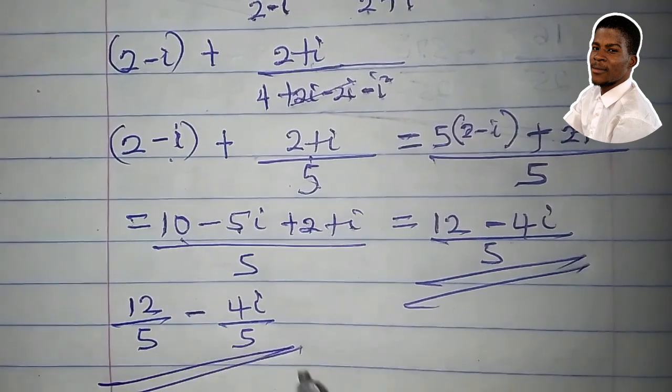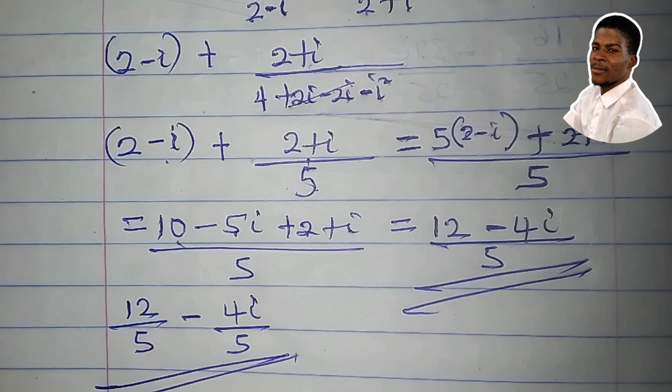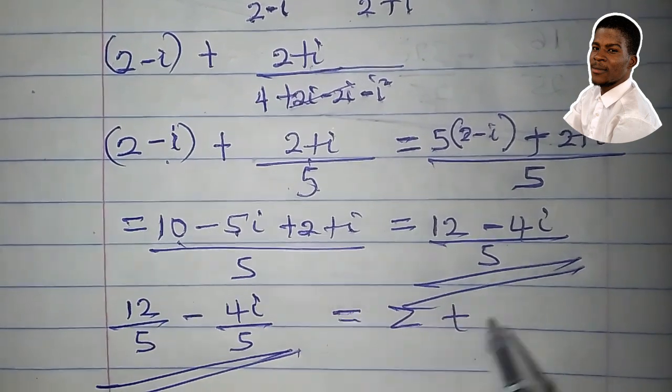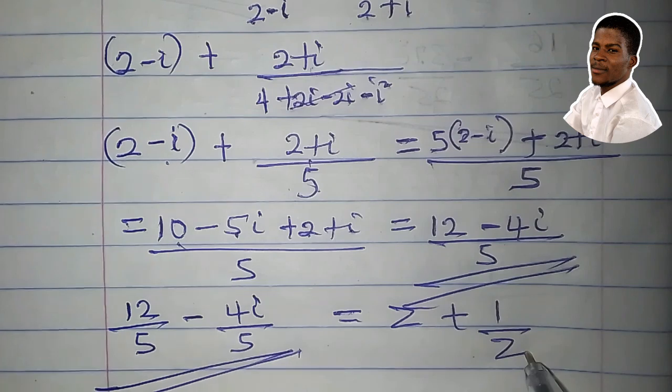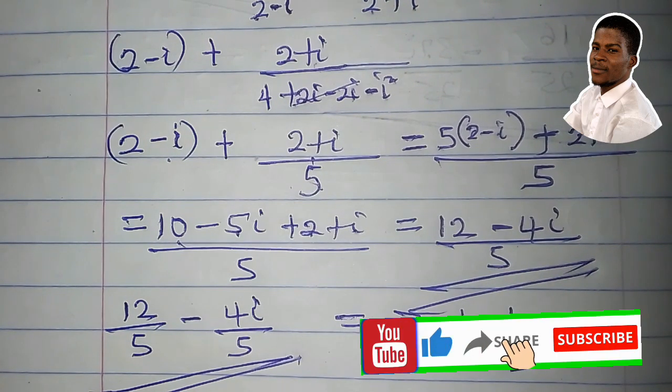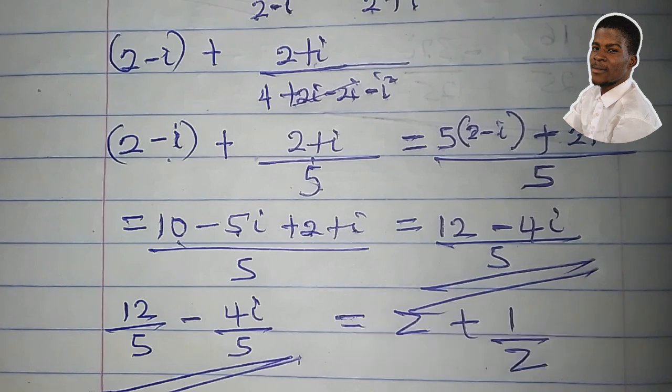So this gives z plus 1 all over z. This is it for Algebra of Complex Numbers. I hope you like the video. I'll see you in the next one.